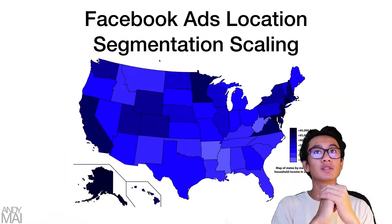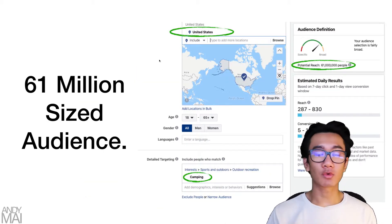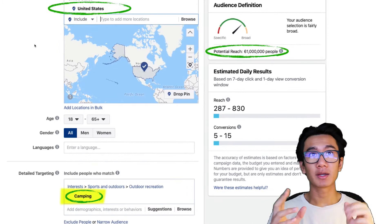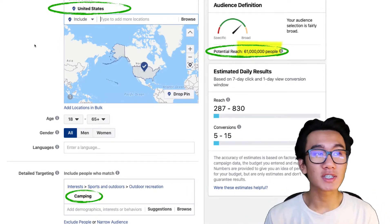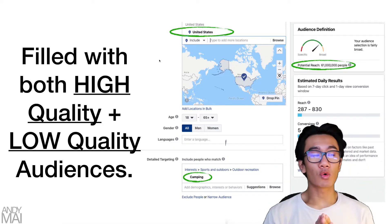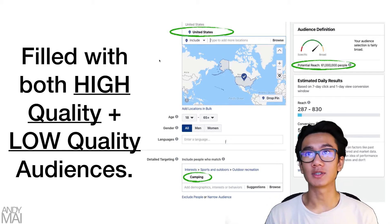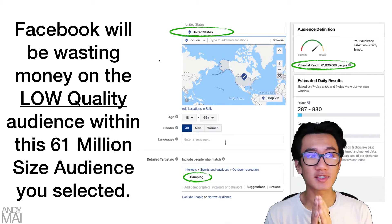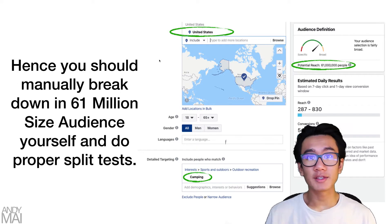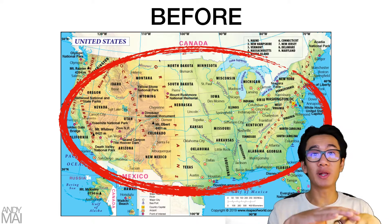So, Facebook ads location segmentation scaling. Here's a quick example: let's say you're targeting camping. You target the United States and you're given a massive audience of 61 million people. That audience is filled with both high quality and low quality audiences. Facebook will be wasting your money on the low quality portion of that 61 million, so you should manually break it down yourself and do proper split tests.